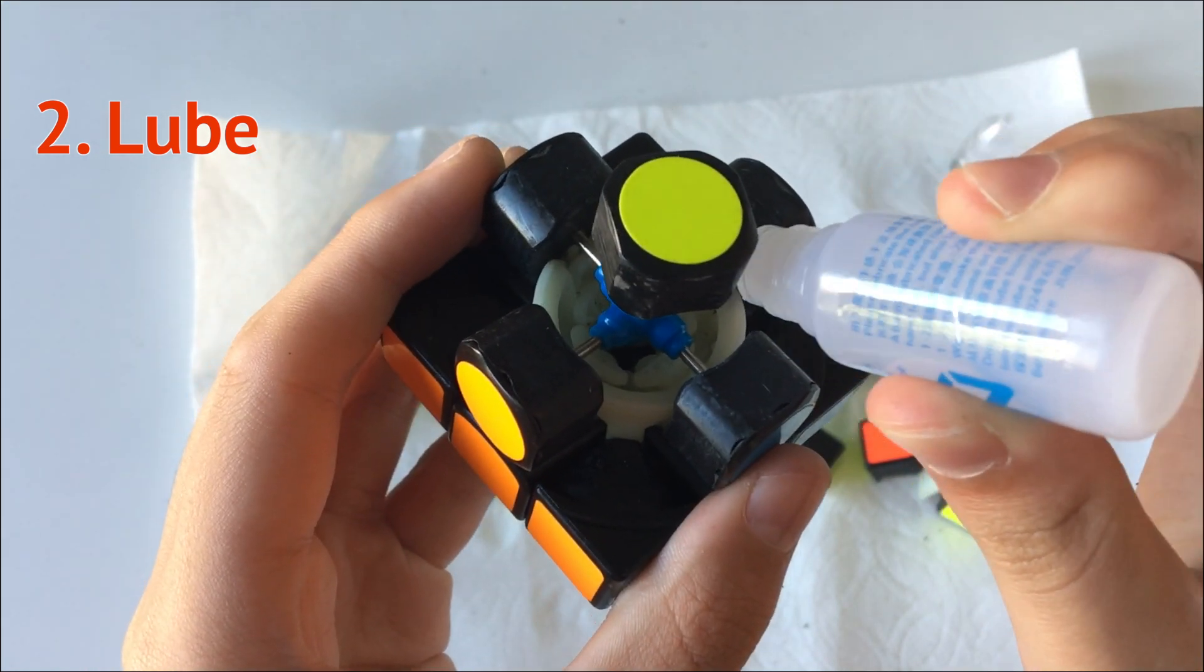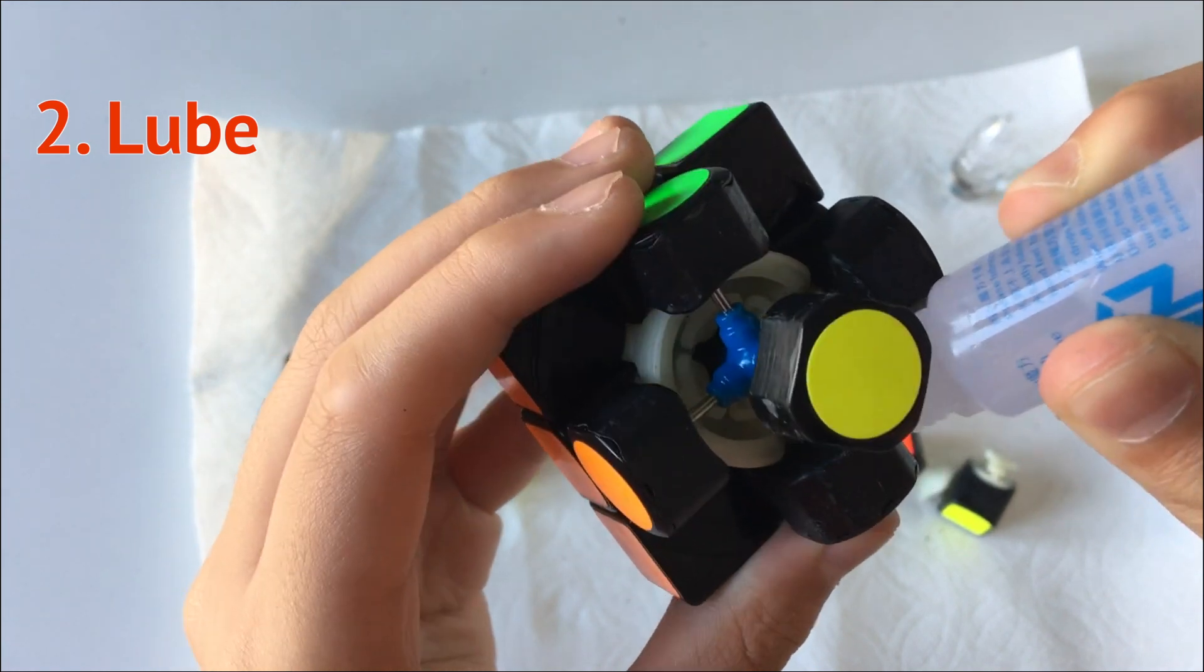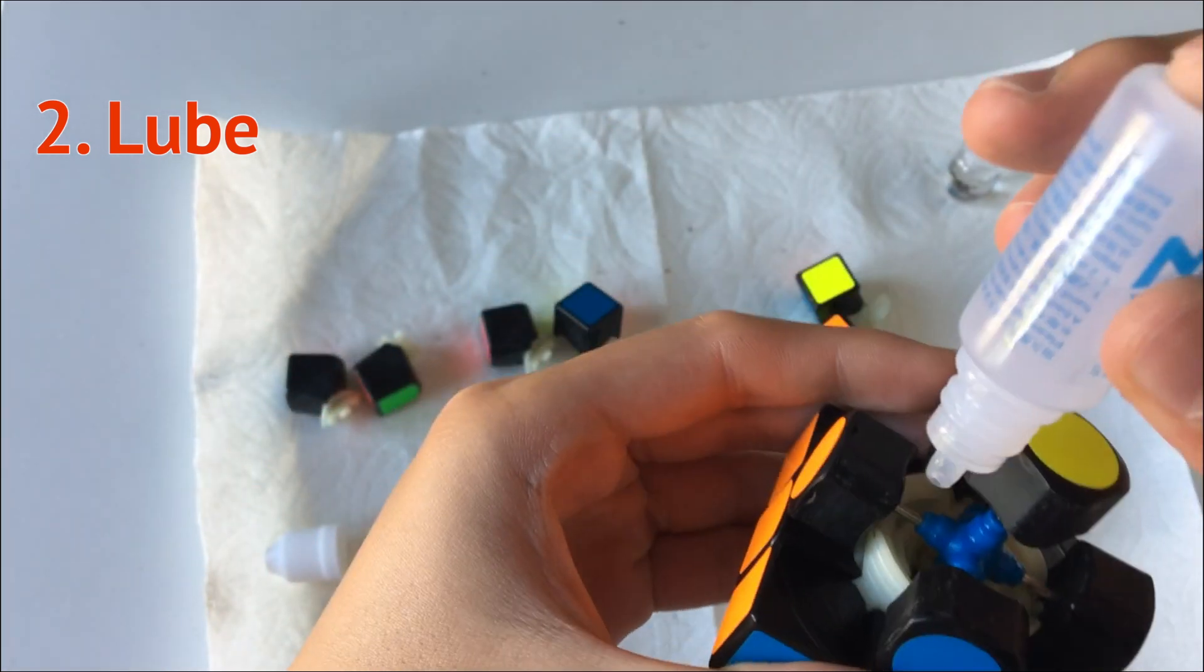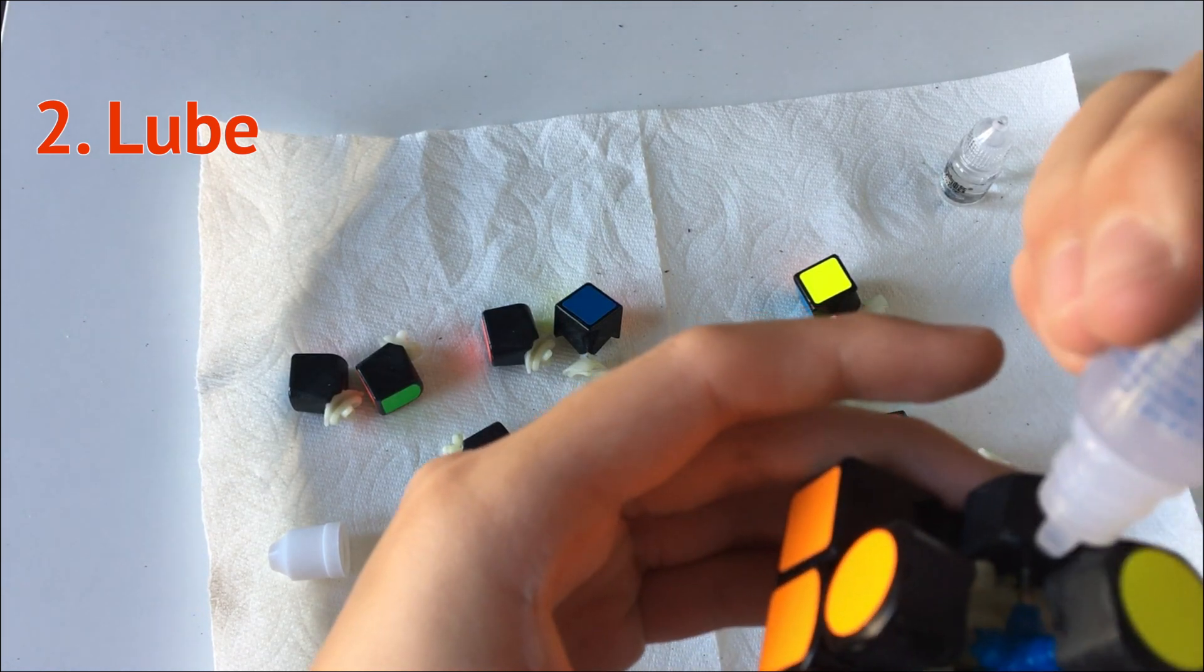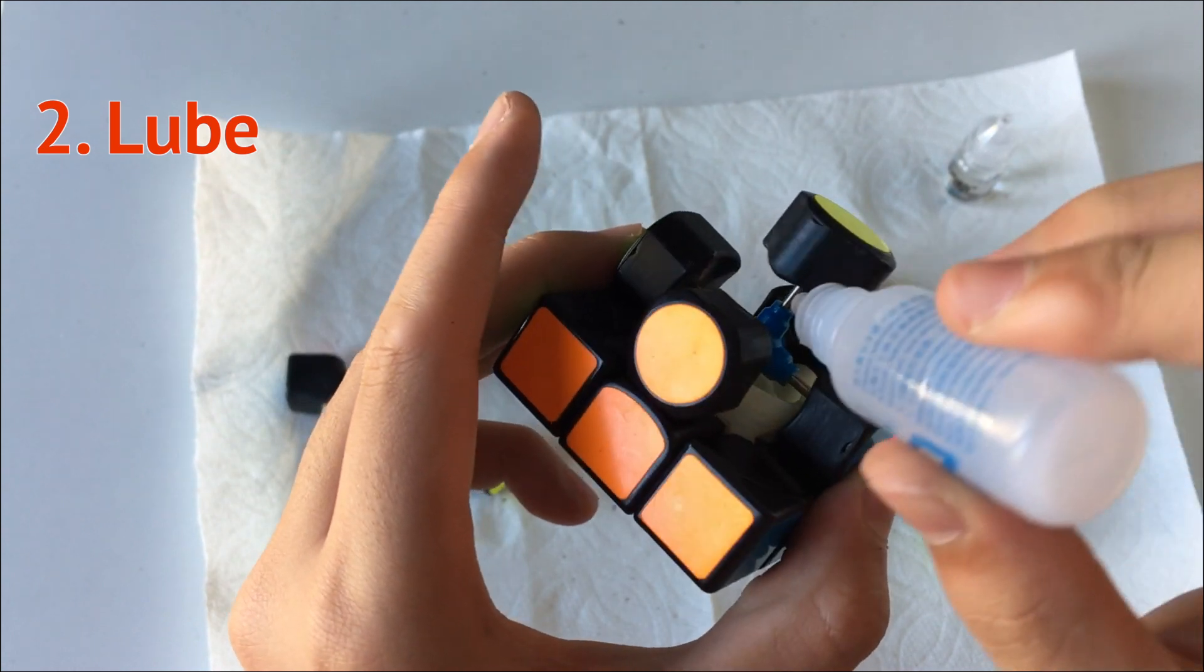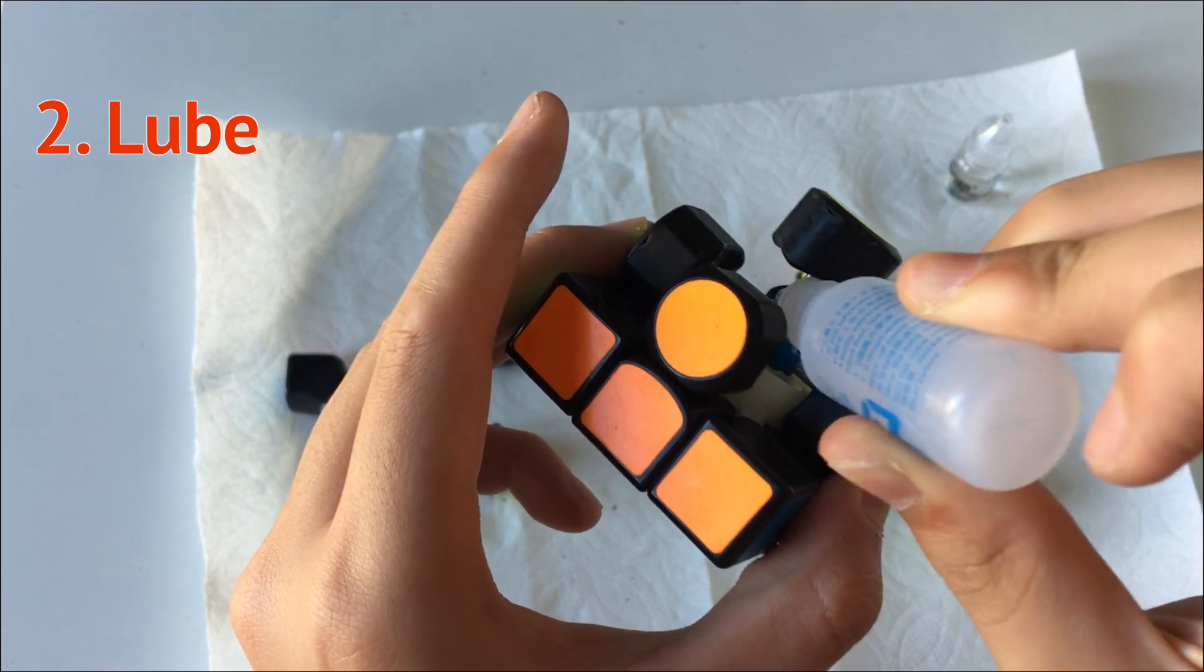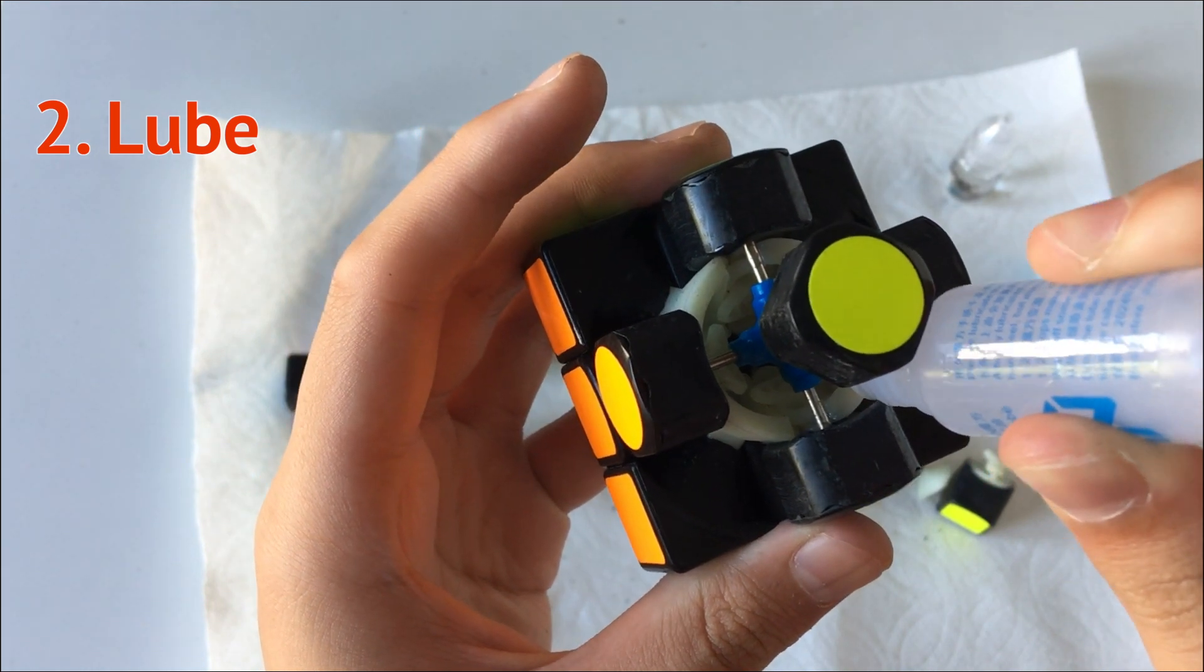Like that. So lube is for the places that the pieces are going to be in contact with each other. There we go, then one last tick. All right.